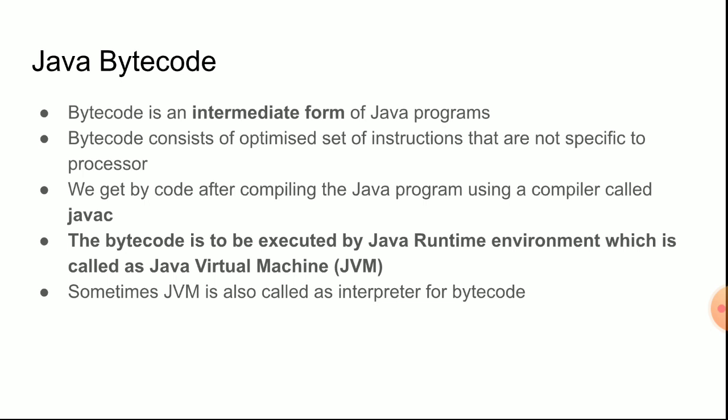The bytecode is to be executed by the Java Runtime Environment, which is called the Java Virtual Machine. To execute a Java program you require JDK and JRE — that is Java Development Kit and Java Runtime Environment. When you install JRE, JVM will automatically get installed; you don't have to install JVM separately.